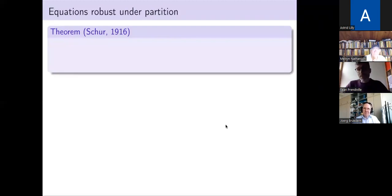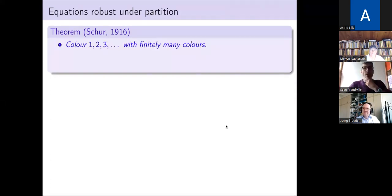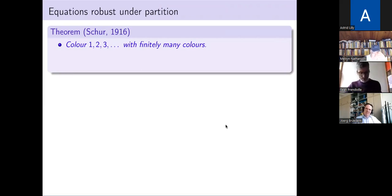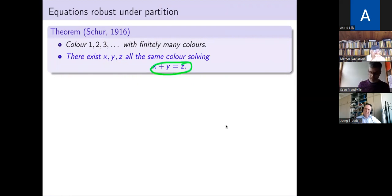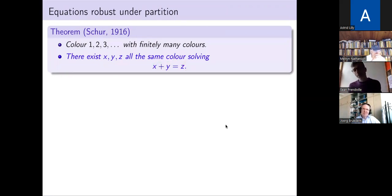Let me give you a flavor of the problems in Ramsey theory I'm interested in. Here's a result of Schur from the early 20th century. We're interested in equations that are robust under partition — which equations can you not destroy their solution set through partitions? If we color the positive integers with finitely many colors, Schur's theorem says there are three positive integers x, y, and z that all have the same color and solve the equation x plus y equals z. So you can't destroy solutions to this equation through finite partitions — one of the parts of the partition has to contain a solution.